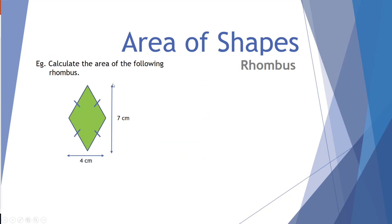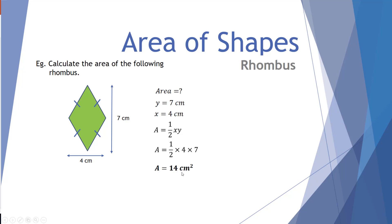Quick example: a rhombus with a height of 7 and a width of 4. We want to find the area. The y value is 7, the x value is 4. The equation is area equals half x times y. So half times 4 times 7 gives me 14 centimeters squared. We must always include the right units.